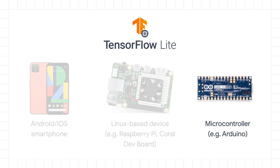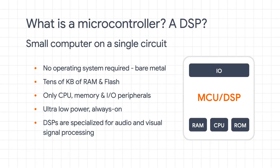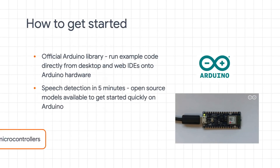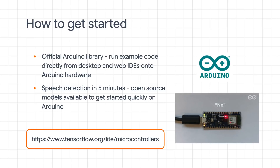The final platform TensorFlow Lite officially supports is microcontrollers such as Arduino. Microcontrollers are small, low-power, all-in-one computers that power everyday devices like microwaves, smoke detectors, toys, and many types of sensors — and they can cost as little as 10 cents per unit. With TensorFlow Lite, you can turn them into devices for machine learning. For example, wake word detection on many smartphones already runs on a small DSP. You can get started with TensorFlow Lite on microcontrollers with Arduino hardware and begin doing speech detection in less than 5 minutes.